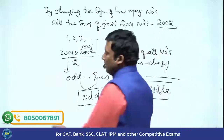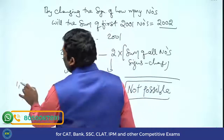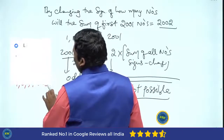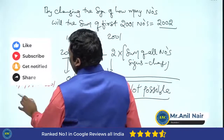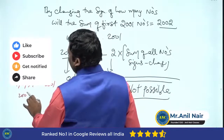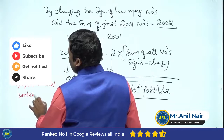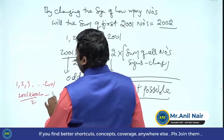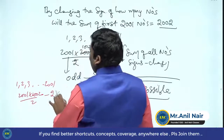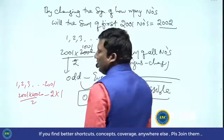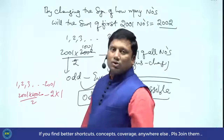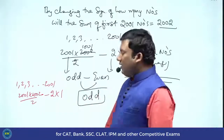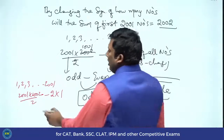You can verify this: take 1, 2, 3, up to 2001. The actual sum is 2001×2002/2. If I change the sign of 1, the drop is 2×1, which gives odd minus even — still odd. Odd minus even is always odd. So it is never possible to reach 2002.